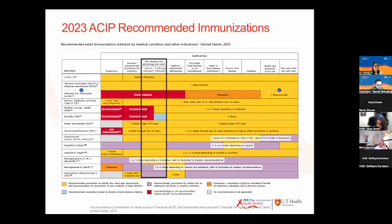This is the ACIP recommendation table. It's a busy slide, but I've highlighted the HIV infection section and CD4 percentage column. COVID-19 vaccination is recommended for all patients with HIV. For flu vaccine, only inactivated influenza vaccines are recommended — the live influenza vaccine is contraindicated, as shown in the red bar.